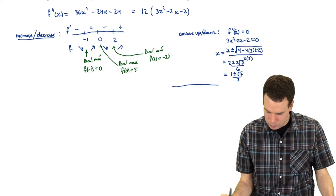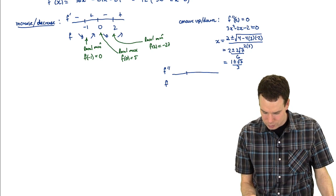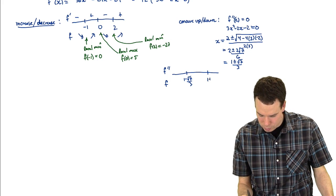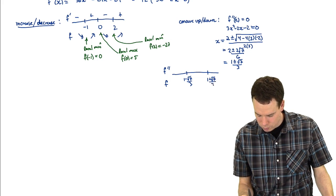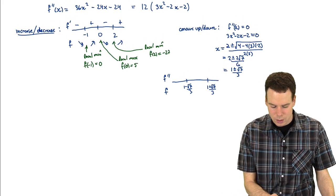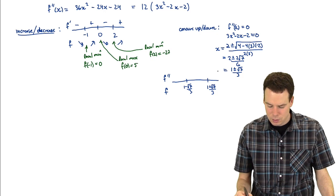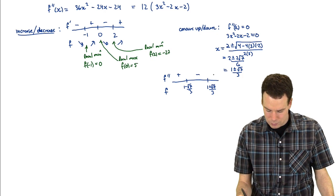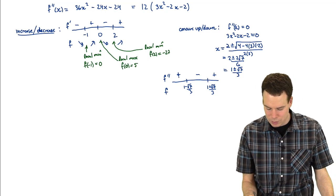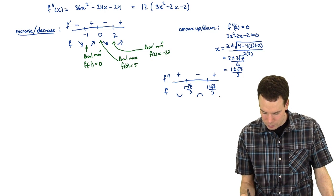For concavity, we're looking at the sign of the second derivative. We've got (1-√7)/3 and (1+√7)/3. The second derivative is a parabola opening upwards with two roots, so it's positive, negative, then positive. Therefore f is concave up, concave down, concave up.